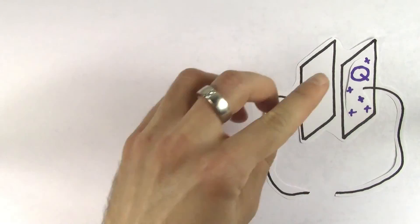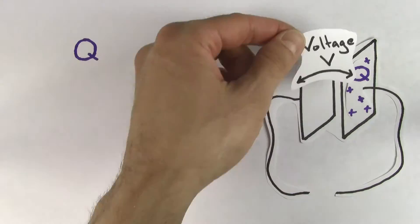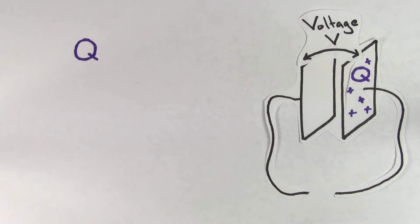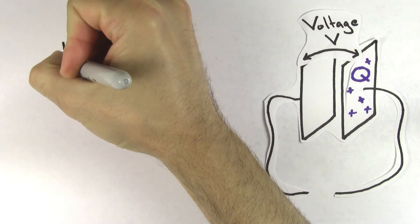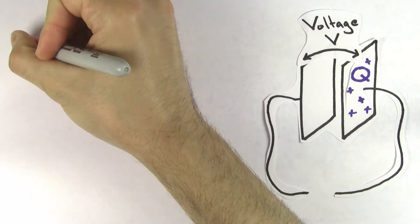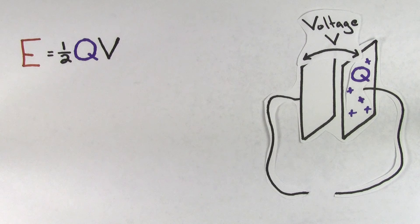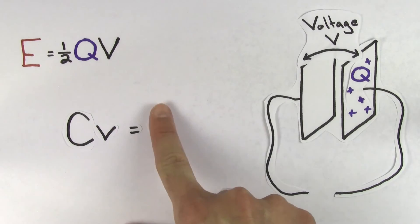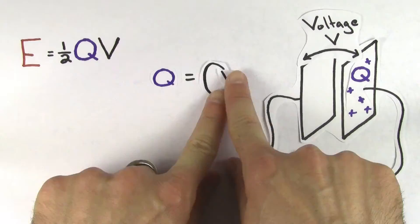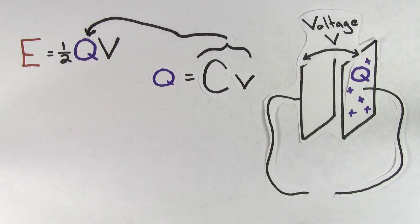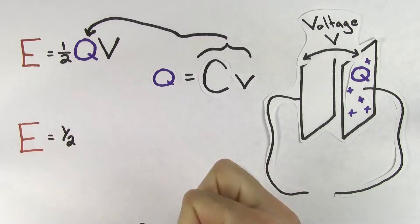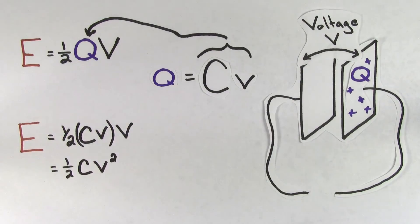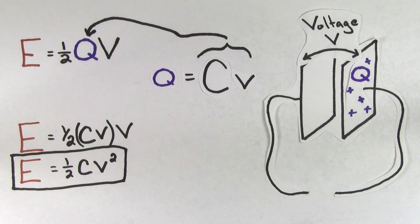So if you take the charge stored on a capacitor at any moment and multiply by the voltage across the capacitor at that same moment, then divide by two, you'll have the energy stored on the capacitor at that particular moment. There's another form of this equation that can be useful. Since capacitance is defined to be charge over voltage, we can rewrite this as charge equals capacitance times voltage. If we substitute capacitance times voltage in for the charge, we see that the energy of a capacitor can also be written as one-half times the capacitance times the voltage across the capacitor squared.